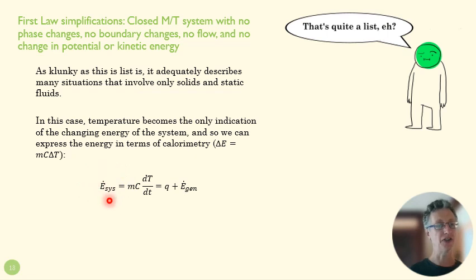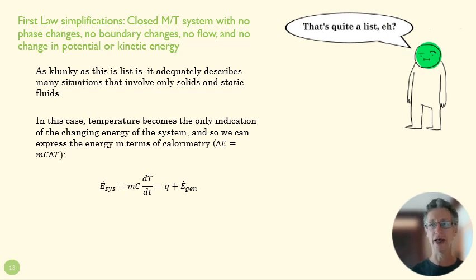the change in energy of the system is only about the temperature of the system. So this is our calorimetry equation that describes how energy is related to the change in temperature. So temperature becomes the only variable over here. Presumably mass stays the same and our specific heat is going to be mostly constant. And then that's going to be equal to whatever is flowing into or out of that system and whatever energy is being generated in that system.